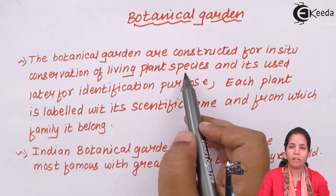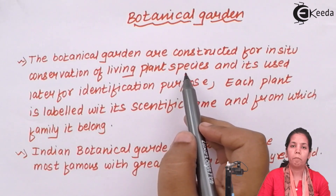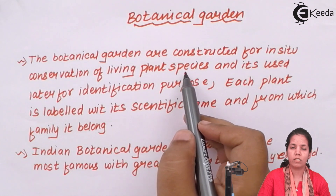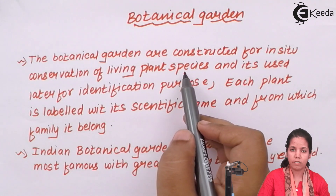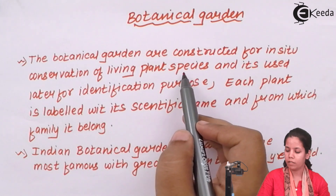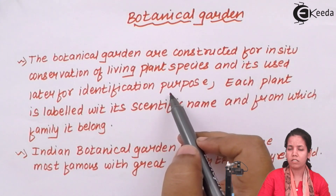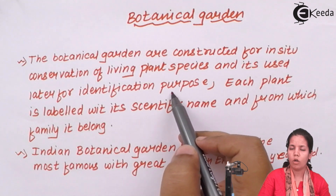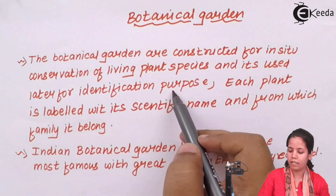These plant species could be angiosperms, gymnosperms, bryophytes, pteridophytes — anything important to mankind, for studies and for the nation. Botanical gardens are used for data identification purposes, especially during evolutionary studies or for identifying endangered or rare species of plants. The identification of these plants is very important.